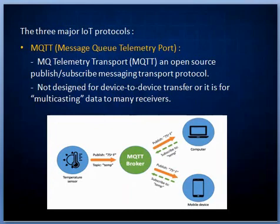MQTT was initially created to link sensors on oil pipelines with satellite communication. Coming to the architecture of MQTT, the connected devices in the MQTT protocol are known as clients, which communicate with the server referred to as a broker. The broker handles the task of data transmission between clients.